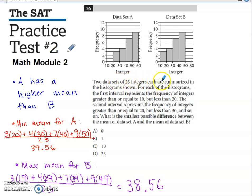Two data sets of 23 integers are summarized in the histogram shown. For each of the histograms, the first interval represents the frequency of integers greater than or equal to 10, but less than or equal to 20.